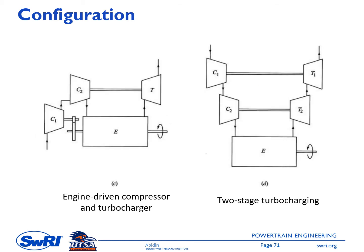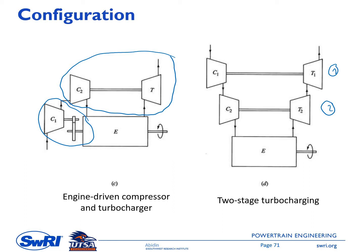The next configuration shows a combination of an engine-driven compressor and a turbocharger. An example of engines using this combination is large marine engines. On the right side, we have two-stage turbocharging with two turbochargers in series. This is one viable approach for providing very high boost pressure — perhaps up to six or seven bar — resulting in even higher engine brake power.